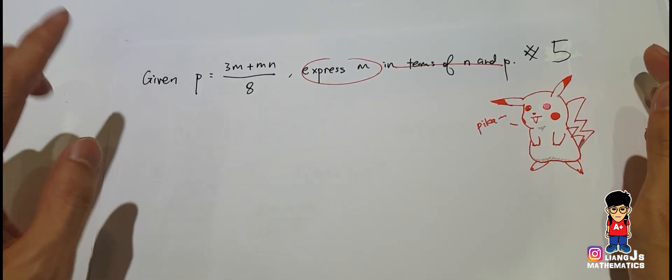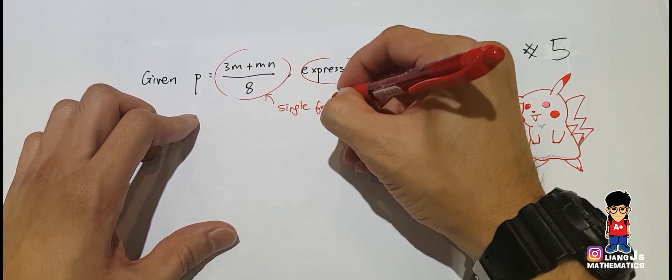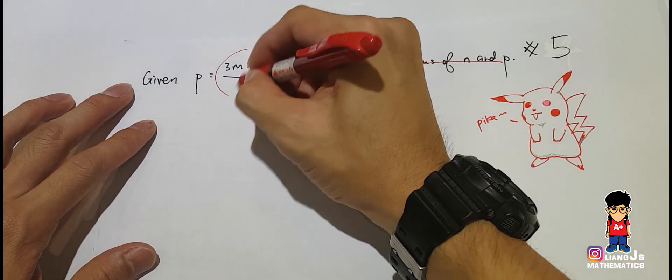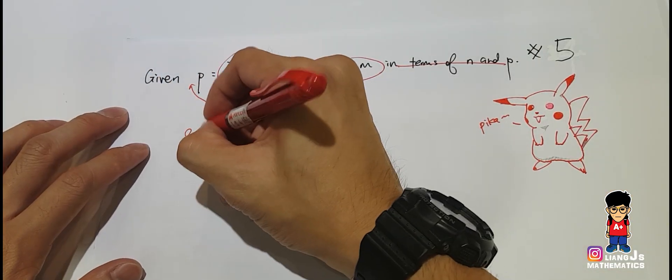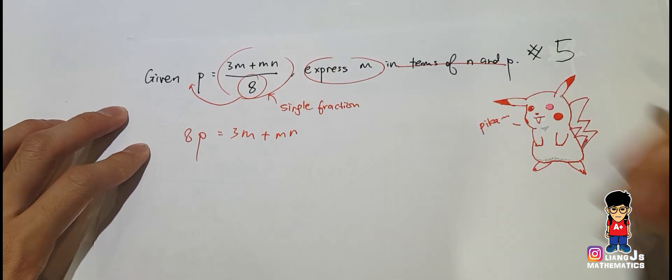We name this as a single fraction. The benefit is you can anytime just move the 8 away, which changes from divide to times, and you will get 8p equals 3m plus mn.